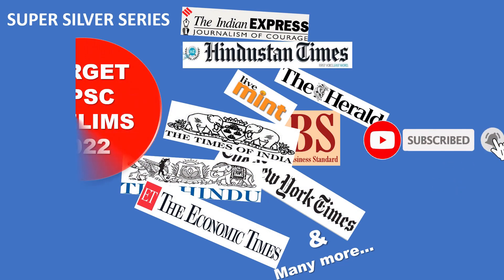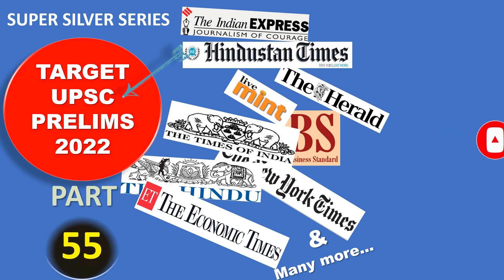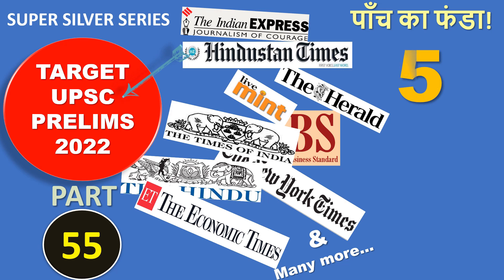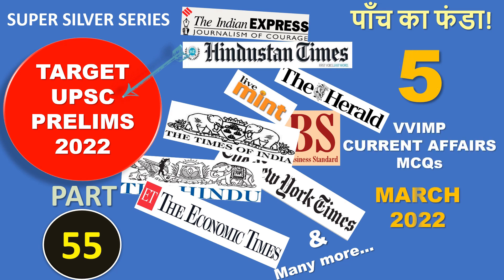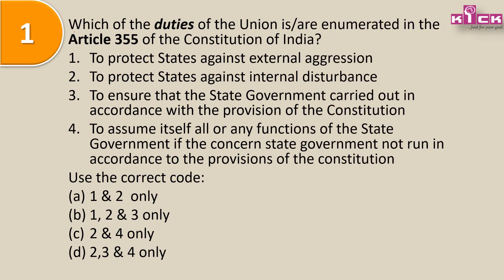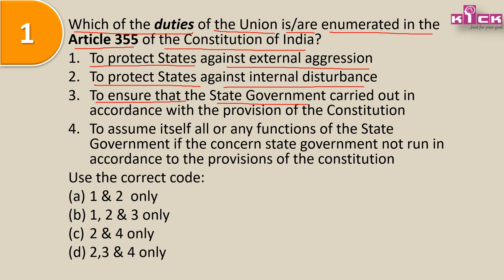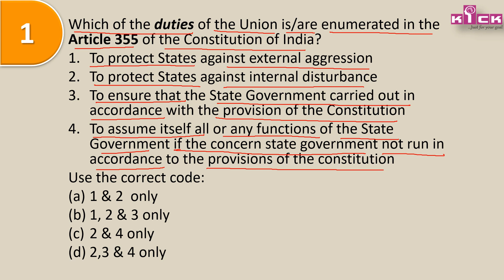The first question: which of the duties of the Union are enumerated in Article 355 of the Constitution of India? One - to protect the states against external aggression; two - to protect the states against internal disturbance; three - to ensure that the state government is carried out in accordance with the provisions of the constitution; and four - to assume all or any functions of the state government if the concerned state government is not run in accordance with the provisions of the constitution.